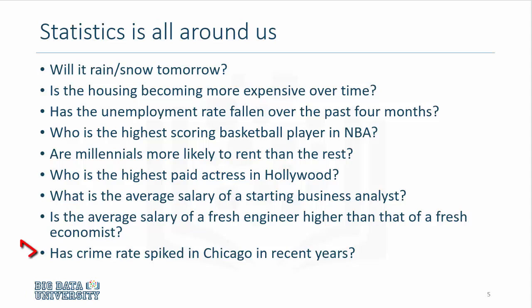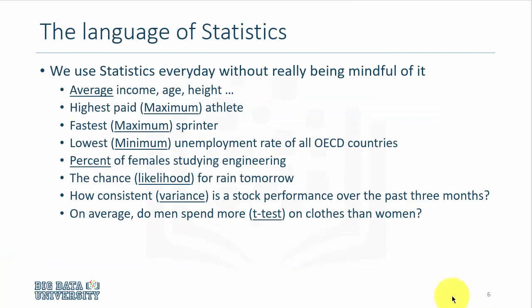And if you happen to be in Chicago, you probably have not missed that crime has spiked in recent years. Similarly, we compare crime — especially violent crime — over years, and this comparison requires us to use statistics. So when we say average income, average age, average height, we are relying on average, which is a statistical parameter.